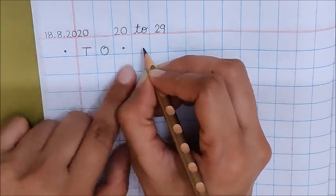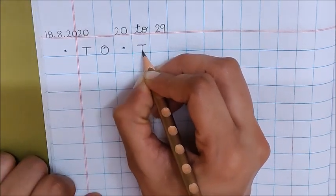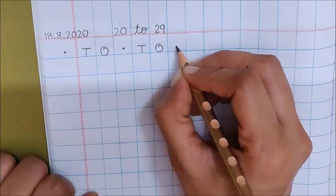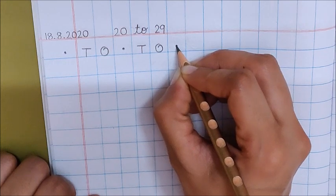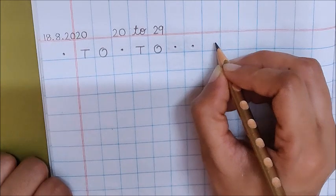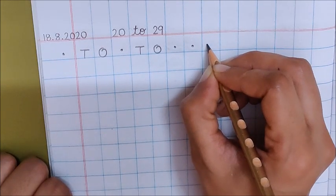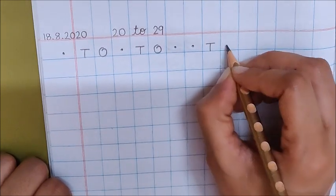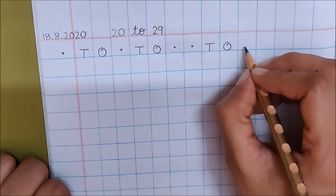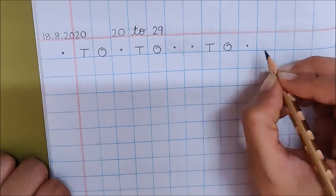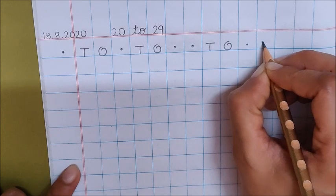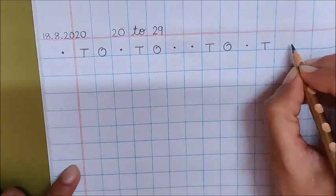Again write down in this box T O. Now put a dot and again put one more dot. Now again write down T O. In the next box put only one dot. See I have put one dot. Now write down T O.